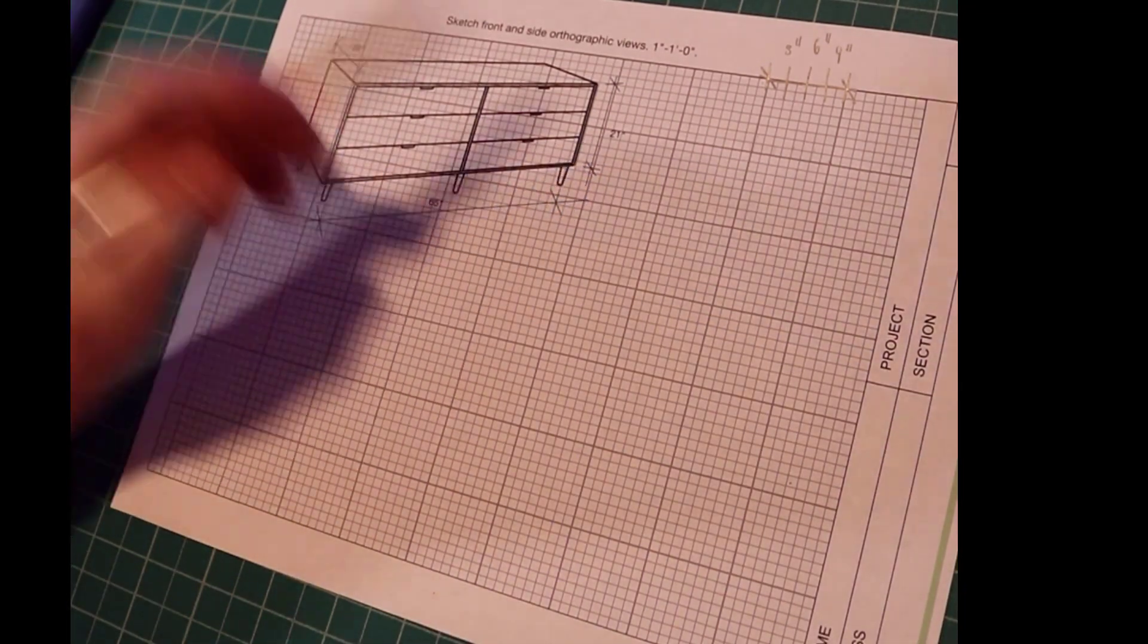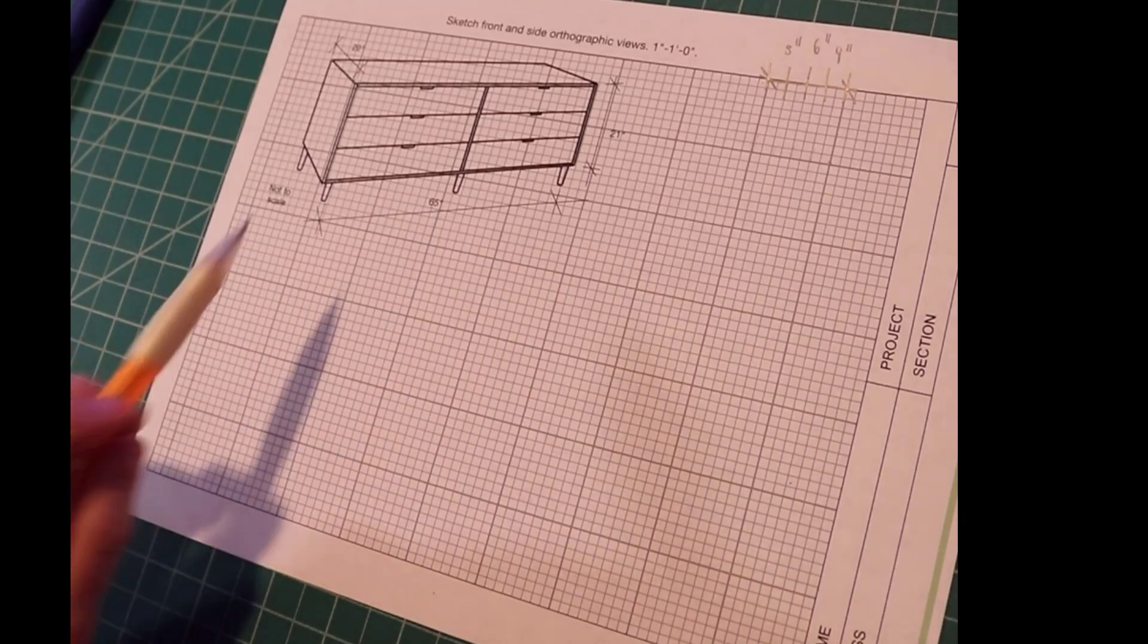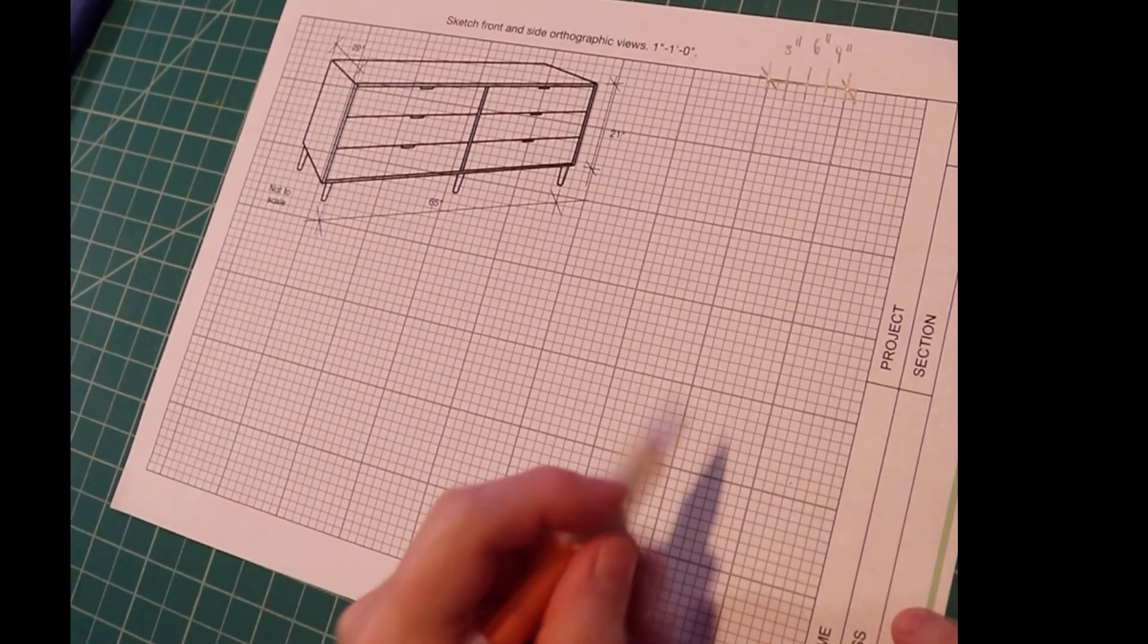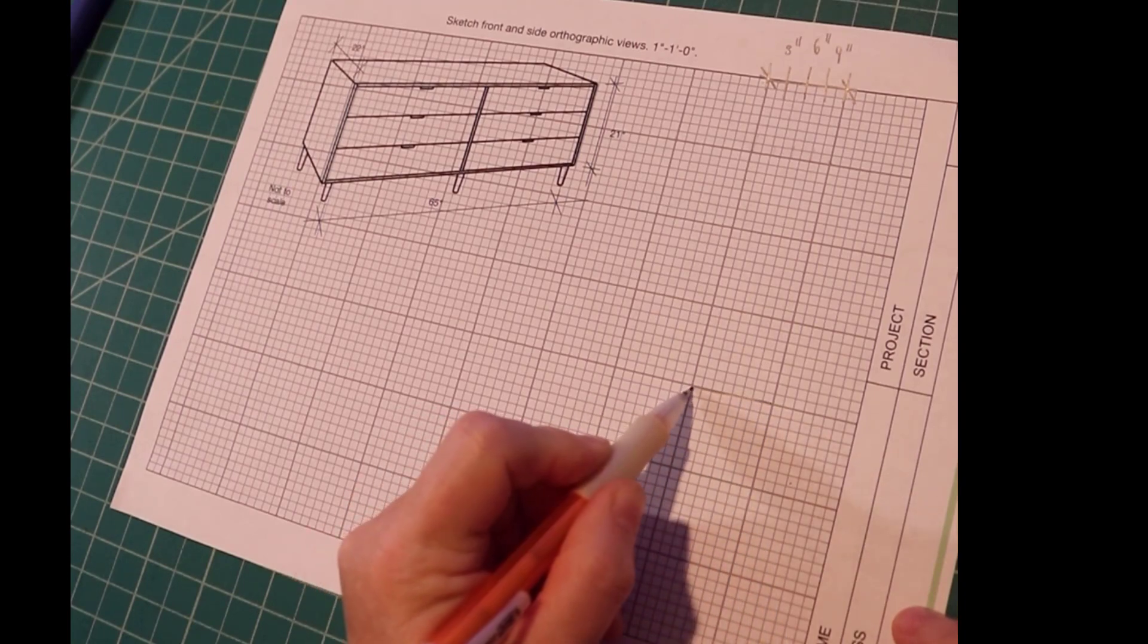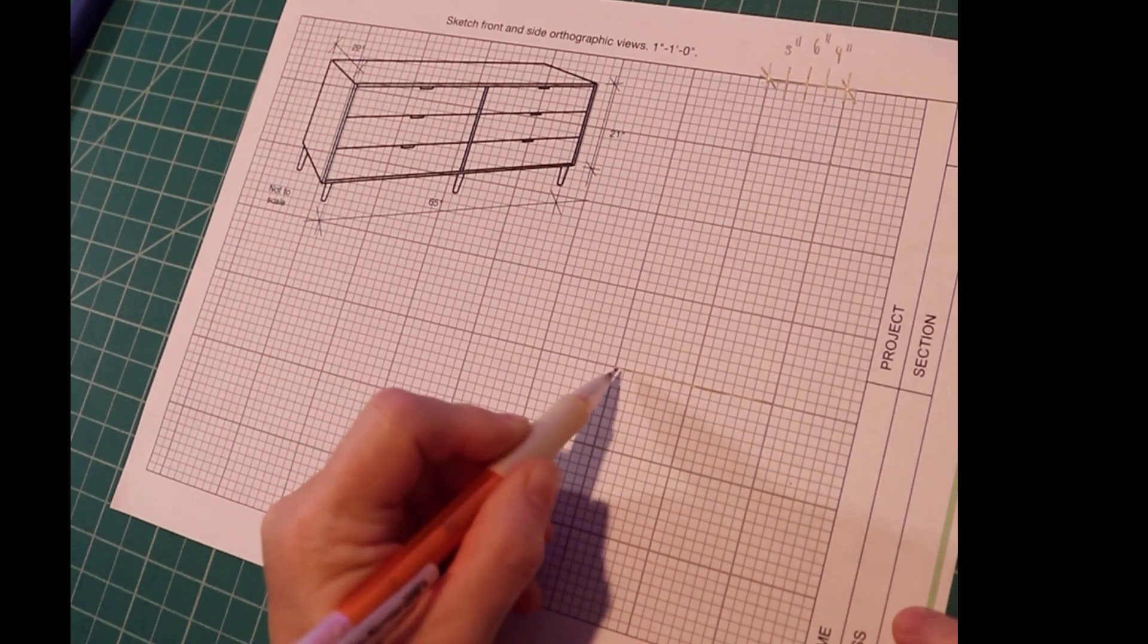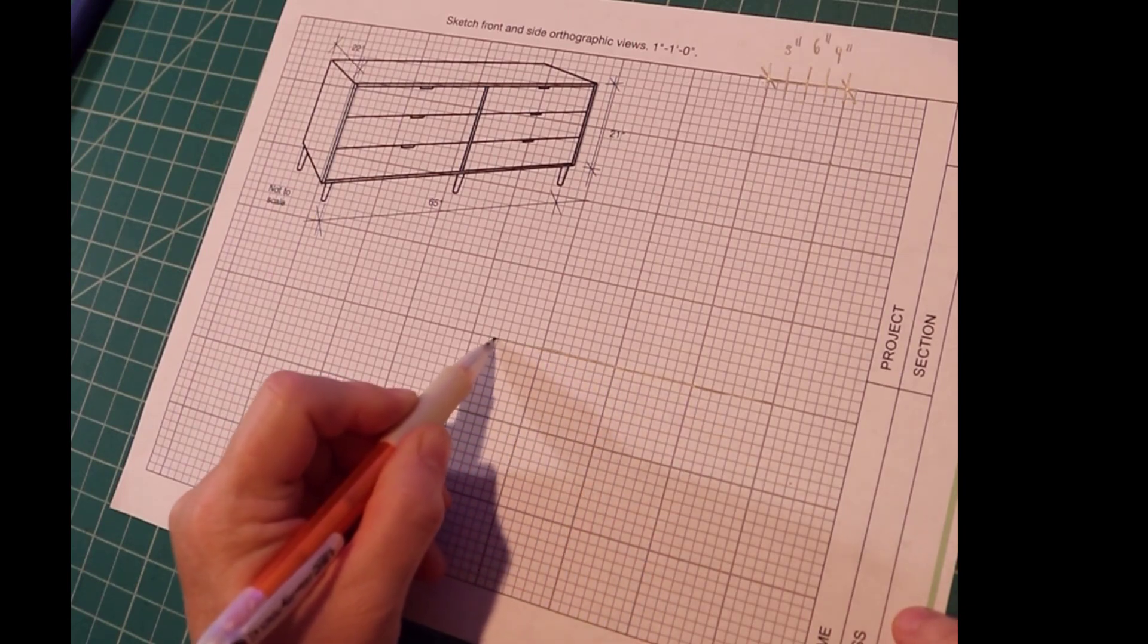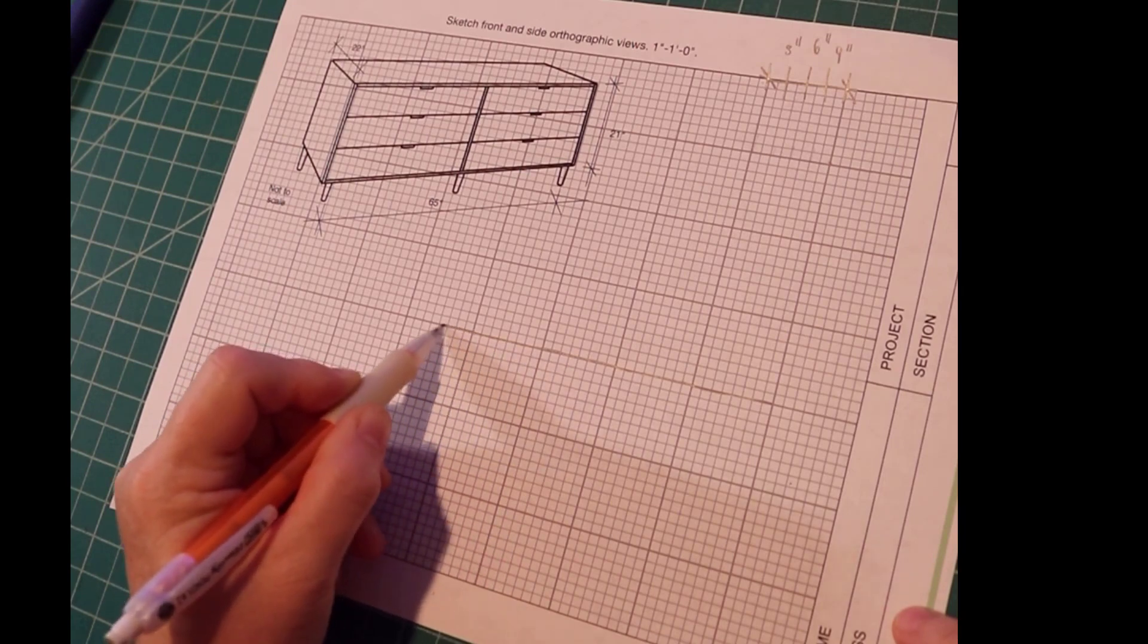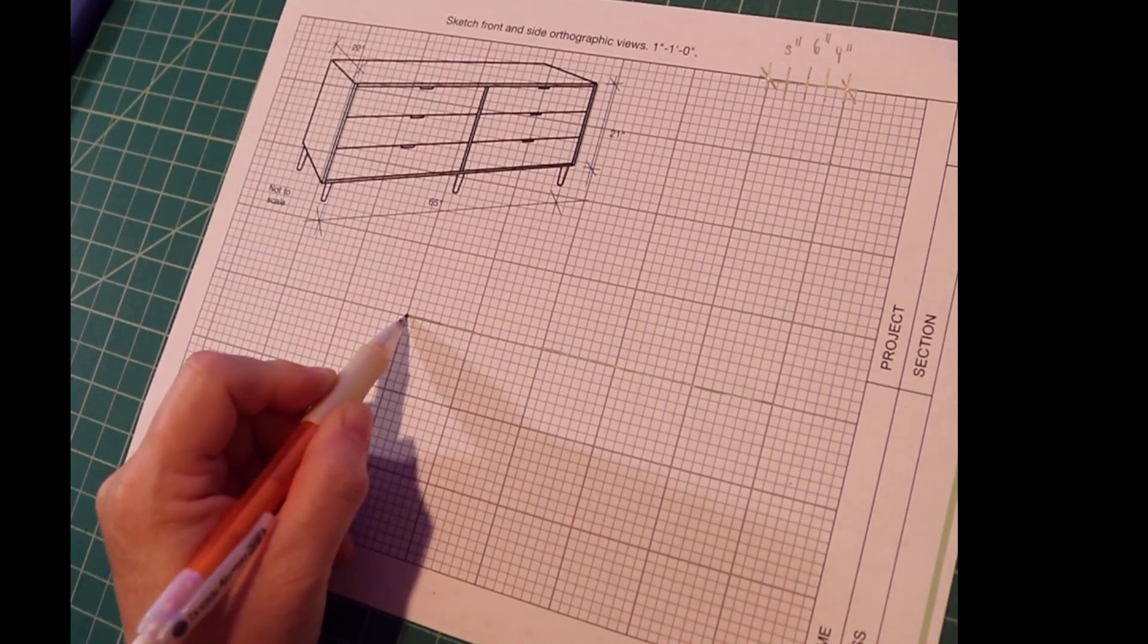Looking at this, this dresser is 65 inches long, so let's sketch that. There's 12, 24, 36, 48, 60, and then 65 would be right about here.